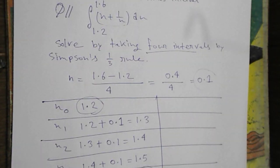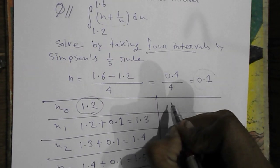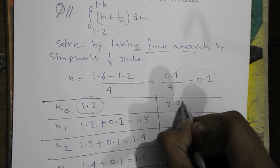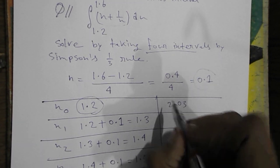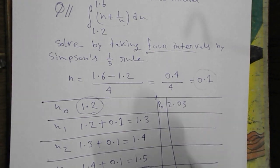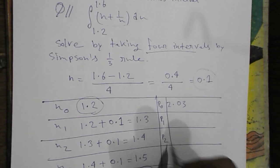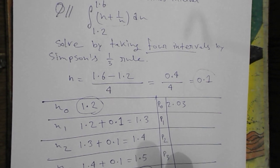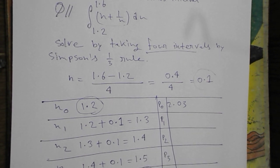And we will write the value 2.03 here. It is p0. Like this p1, p2, p3, p4. We have to calculate.